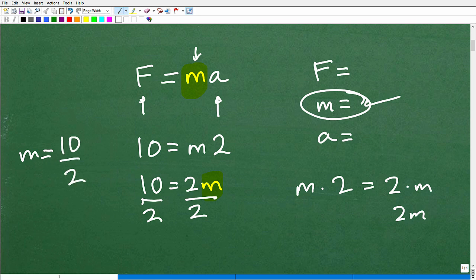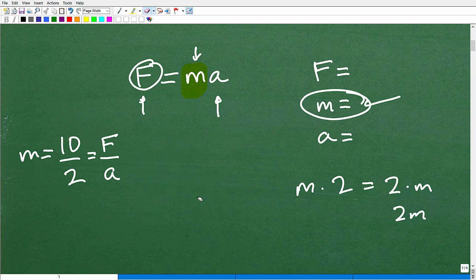But now if you think about this, what was 10? 10 was our F. And then this 2 was the same thing as our acceleration. So really, what we just did is rewrite this equation. We wrote this formula in terms of M. So M is equal to F over A. You have to be able to solve for an indicated variable in a formula or an equation. This is critical in algebra.